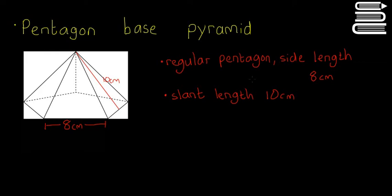So now we're going to have a look at a pyramid question. This specific one is a pentagon-based pyramid, but the same method can be used for any pyramid no matter what the shape. We have a regular pentagon — the side length is 8 centimetres, so the bottom is a five-sided shape, each of these sides is 8 centimetres, and the slant length is 10 centimetres.